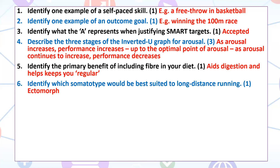Identify which somatotype would be best suited to long distance running. The ectomorph — the ectomorph is the thin individual not carrying any great excess weight, excess muscle or fat. They tend to be fairly light and short in frame, although not always about height, but in this instance it kind of makes sense that they are.